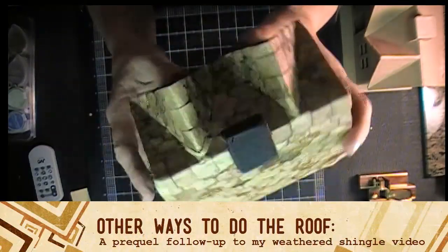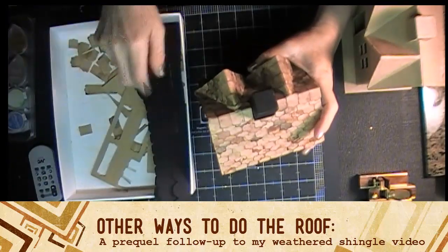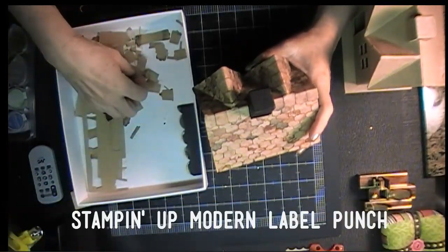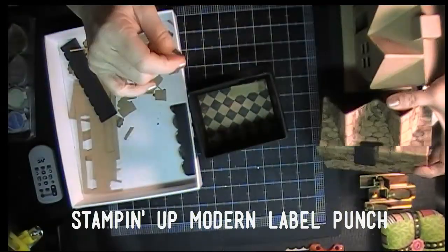In a previous video I showed you how I decorated this little paper mache house with a punch from Stampin' Up called Modern Label. You can get that on the Stampin' Up website, eBay, or Amazon for about $20-$25.